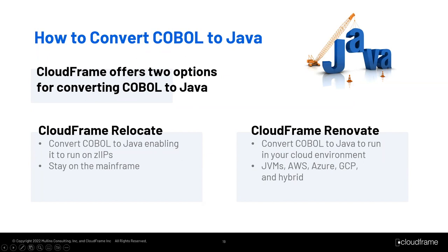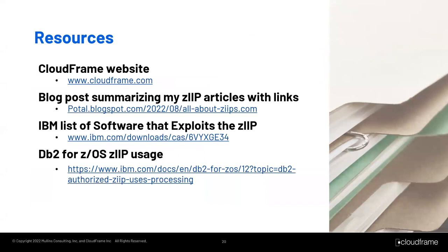Additionally, there's CloudFrame Renovate — the second offering — focused on converting COBOL to Java with a goal of implementing in a cloud environment. So you can choose to stay on the mainframe, move to the cloud, or work in a hybrid cloud world with some workloads on the mainframe and some in the cloud. This slide shows a list of resources to keep handy: the CloudFrame website, a link summarizing zip-related articles and blog posts Craig wrote for CloudFrame, the IBM list of software that exploits ZIPs, and the list of DB2 for ZOS ZIP usage.